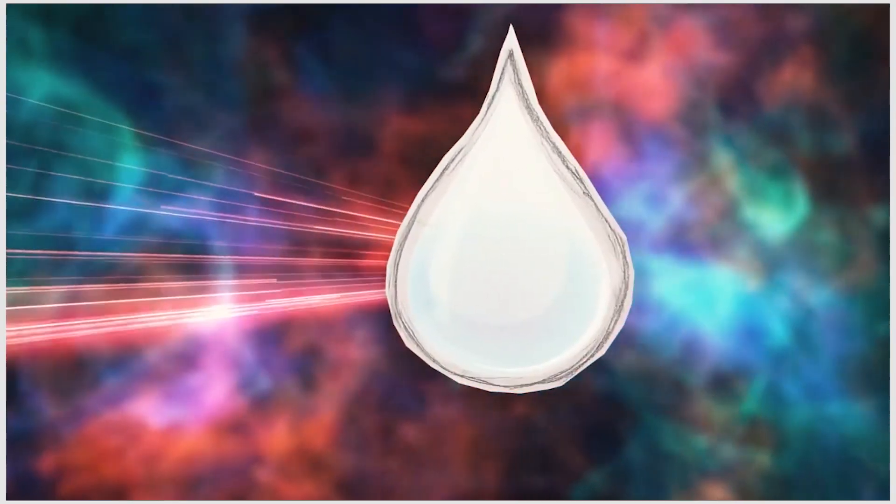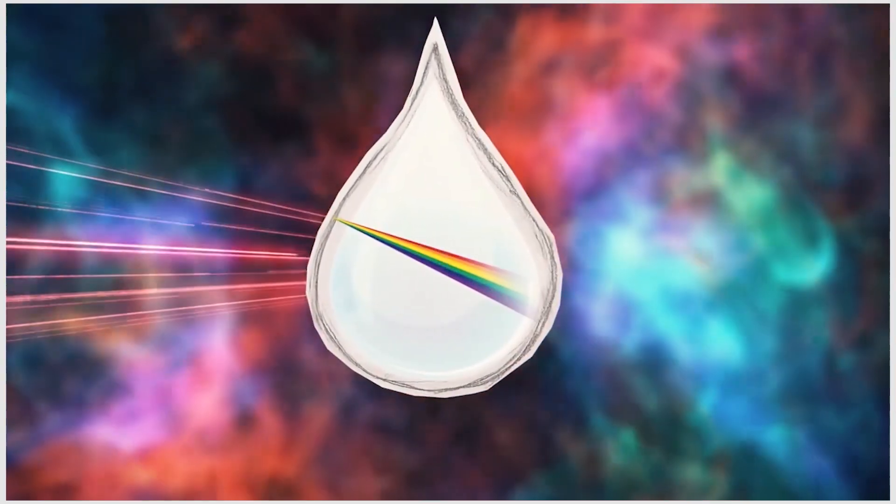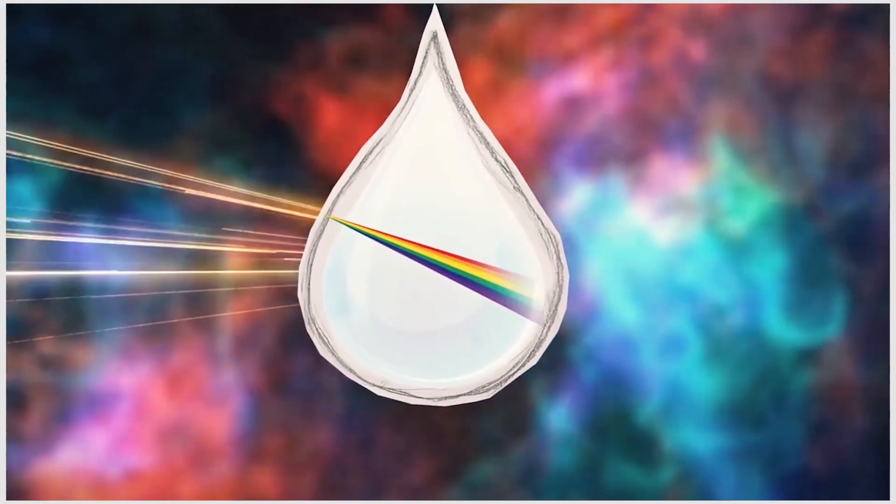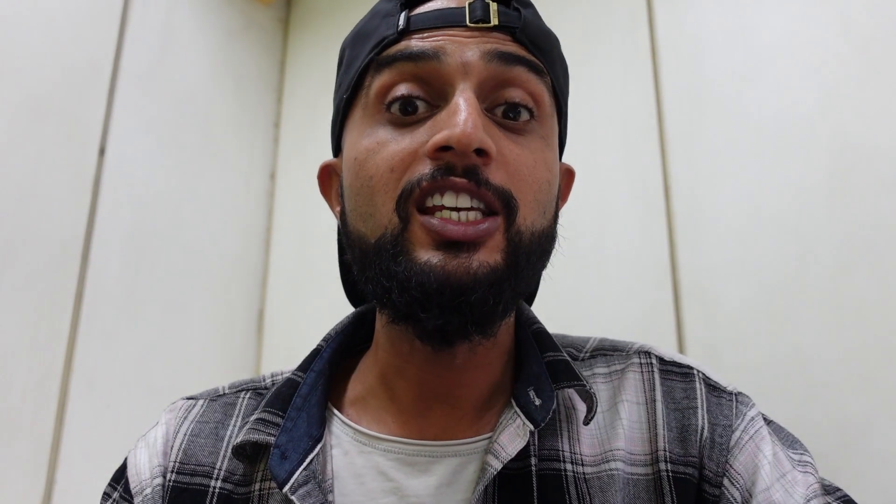What basically happens is that the light hits the water droplet at a certain angle. This angle is a very important factor in the formation of rainbows. That's why rainbows are mostly seen at dawn or late afternoon, when the sun is fairly low in the sky.